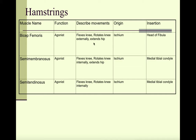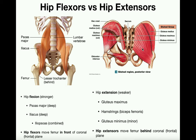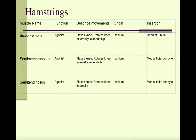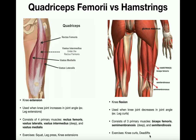The hamstrings are involved in knee flexion. Another action that at least some of the hamstrings — the biceps femoris and the semimembranosus — are involved in is hip extension, though the major muscle for hip extension is the gluteus maximus, which we'll cover in the next video. The most obvious hamstring exercise is the knee curl, but deadlifts are also good for strengthening the hamstrings because they involve hip extension, in which the hamstrings play a supporting role.